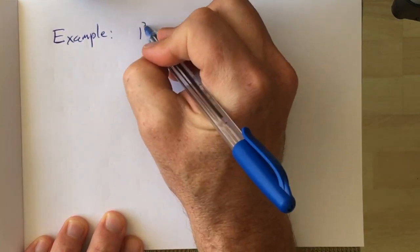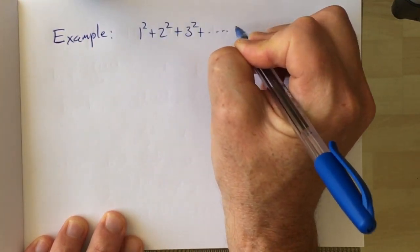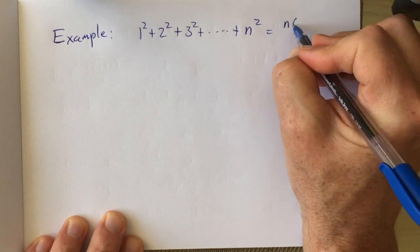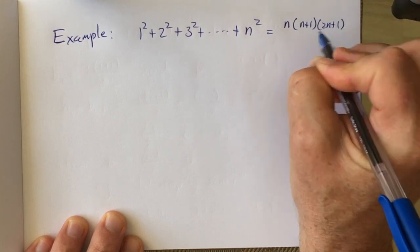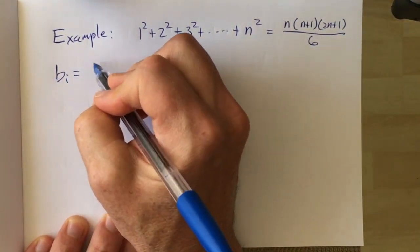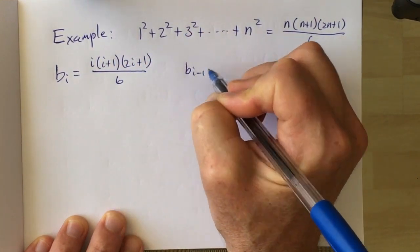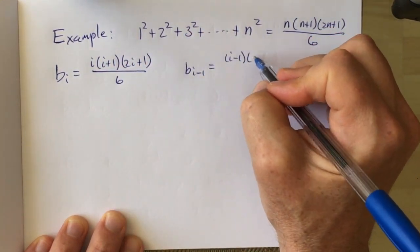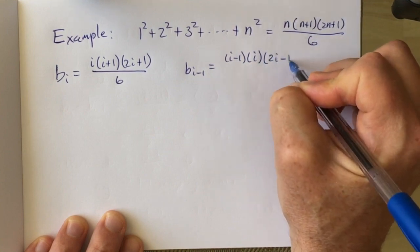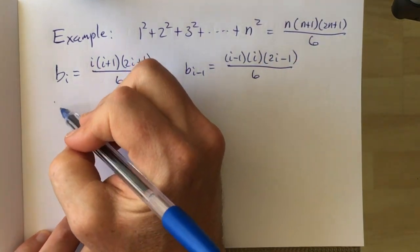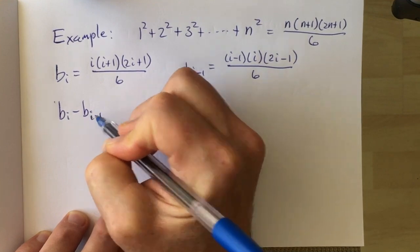So now let's apply this to the other example that we have, the sum of the first n squares. And I said that this was equal to n times n plus 1 times 2n plus 1 over 6. So then we write down what the bi-th term is, and then we write down what the bi minus 1 term is, and then we look at their difference.